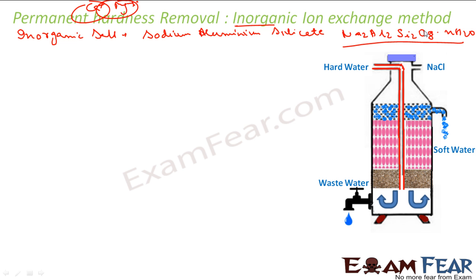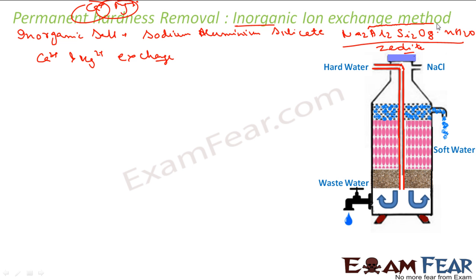This complex salt is called zeolite, and it has a unique property of exchanging calcium and magnesium ions. For simplicity, instead of writing the full formula Na2Al2Si2O8·nH2O, I'll write it as Z — so the formula becomes Na2Z.